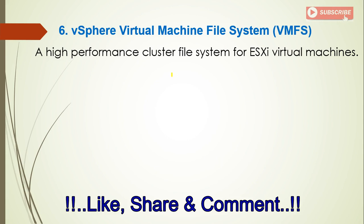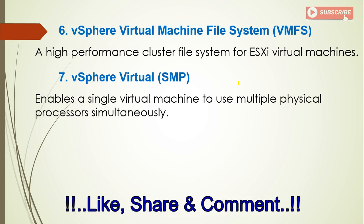The sixth feature is Virtual Machine File System, also known as VMFS. It is a high-performance cluster file system for ESXi virtual machines. ESXi stands for Elastic Sky X — the X represents the version such as 6.5 or 6.7. The seventh feature is vSphere Virtual SMP, which enables a single virtual machine to use multiple physical processors simultaneously, so one virtual machine can access multiple physical processors at the same time.